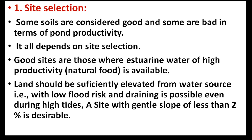The first one is site selection. Some soils are considered good and some are bad in terms of pond productivity. Good sites are those where estuarine water of high productivity is available, so natural food is available.